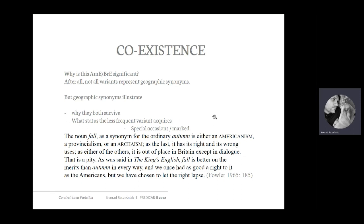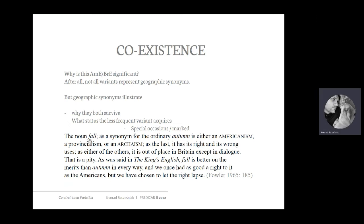From the British perspective, autumn is the dominant variant and fall is something of a special-purpose word. As Fowler 1965 said, the noun 'fall' as a synonym for the ordinary 'autumn' is either an Americanism, a provincialism, or an archaism. For British speakers, 'fall' is a familiar noun — they know what it means and that it's a synonym for autumn — but they don't use it, or when they do, they have special reasons: they want to sound archaic, like Shakespeare, or more American. Otherwise, 'autumn' is the unmarked default choice.